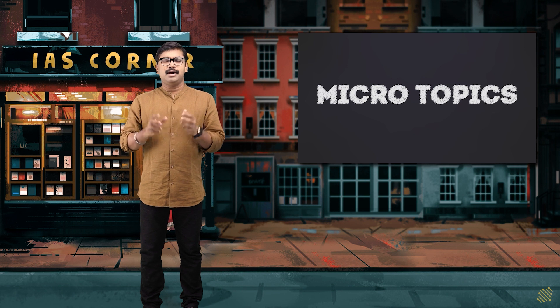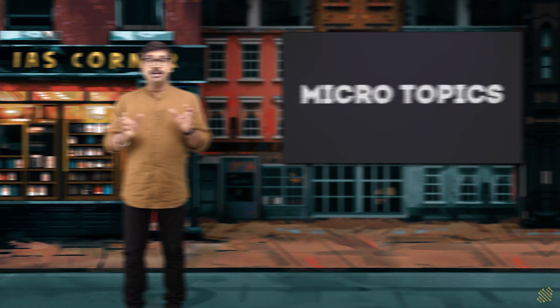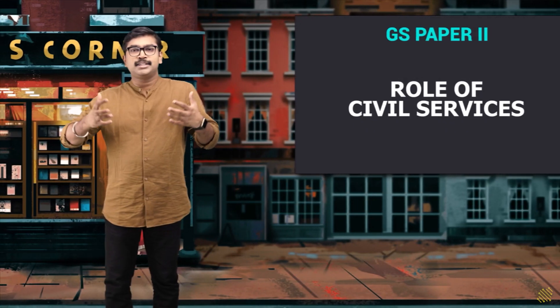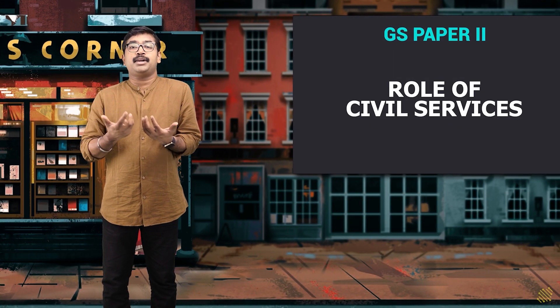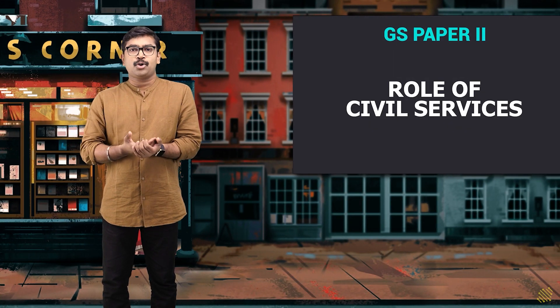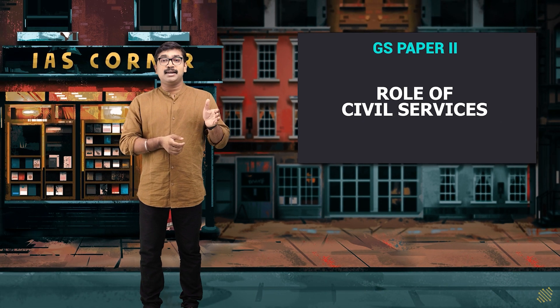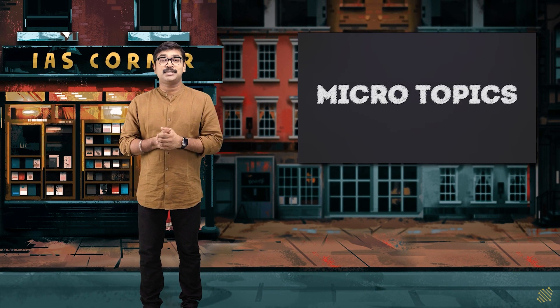We have discussed welfare, health, and education. GS Paper 2 also contains governance, justice, and different concepts of administration. The concept of e-governance is very important because every service is now completely online. Apart from that, another big topic for GS Paper 2 is the role of civil services in India. These are some of the micro topics of GS Paper 2.